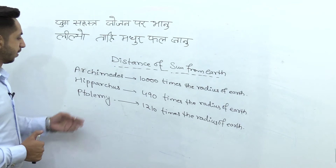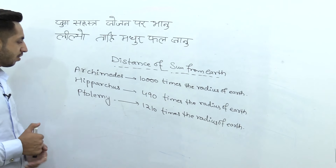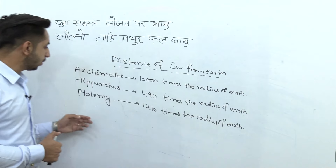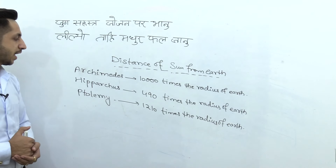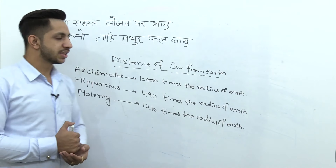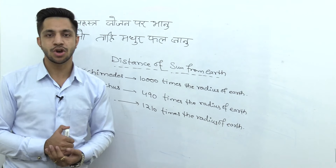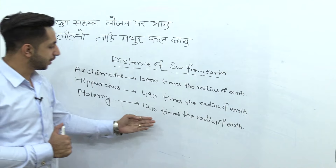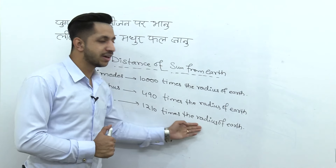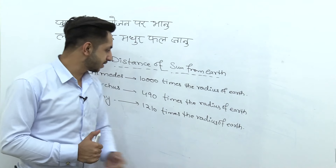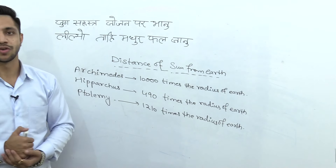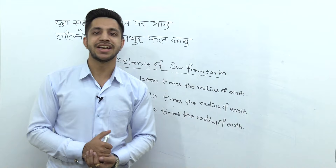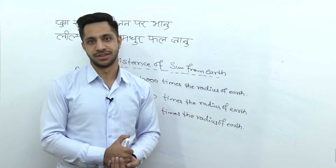Yeh hi nahi, humare paas ek aur scientist ne bataya that the distance of sun from earth should be 1210 times the radius of earth. But yeh toh in scientists ki baat thi.